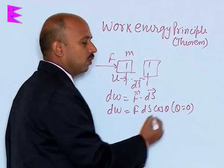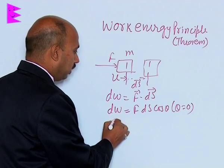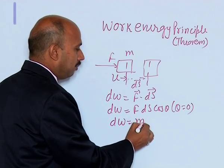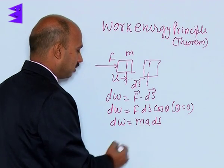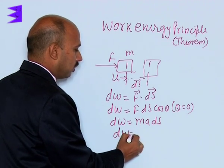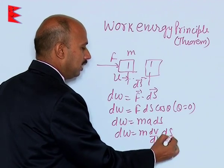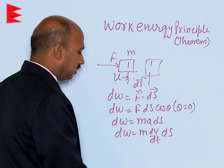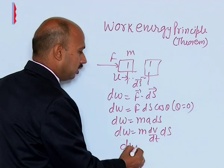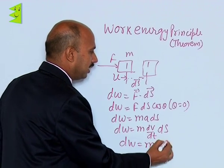Here we can take theta equal to 0. So dw is equal to m into a into ds, and dw is equal to m dv upon dt into ds. ds upon dt is velocity, that is the instantaneous velocity. So dw is equal to m v dv.